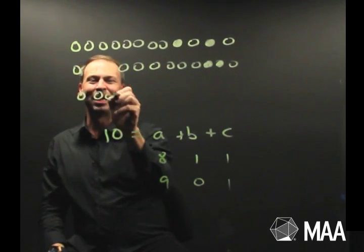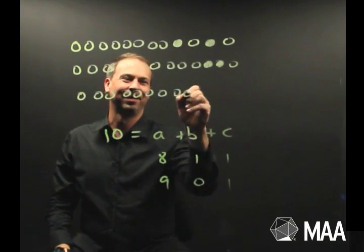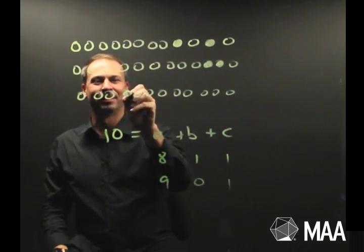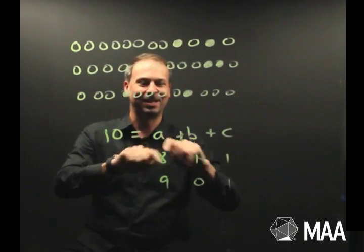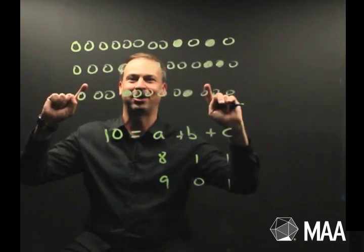Ah, now I can see whenever I draw 12 dots, color two of them solid, I get a solution to the equation, 3, 4, 3. And vice versa, every solution to the equation is a picture.